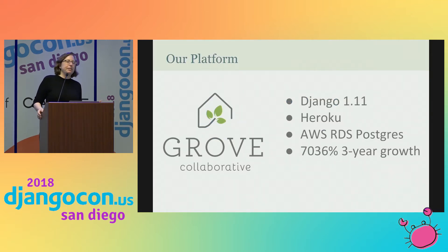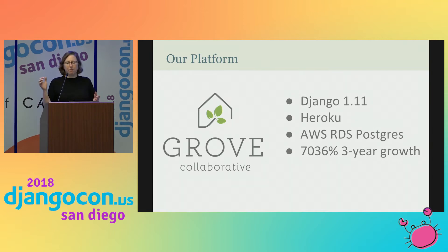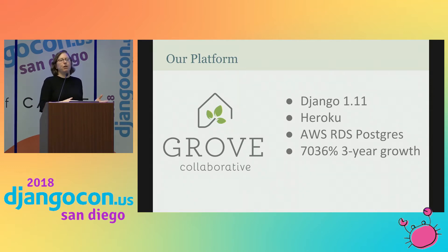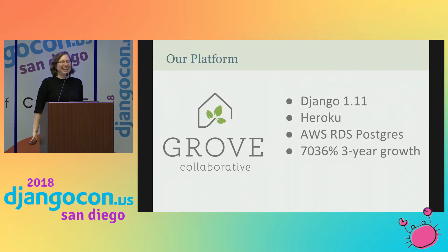Grove Collaborative is a San Francisco-based startup. We are a Django shop. Right now we're running a monolithic setup with the 1.11 line. We host with Heroku. We're kind of mid to end of life on Heroku because we are expanding quite rapidly. We also have a fairly beefy setup on Amazon's RDS Postgres, and our solution for a long time has been: if the website is slow, add another read replica and everything will be all right. But then there was that one time that we grew over 7,000% in three years, and adding read replicas didn't quite cut it anymore.